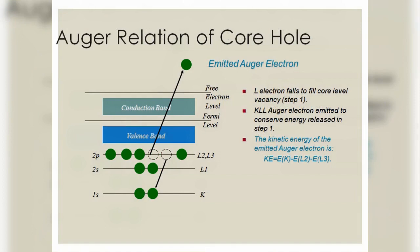So the Auger relation of core hole. The L-electron falls to fill core-level vacancy. And the kinetic energy of the emitted Auger electron is KE = E(K) - E(L2) - E(L3).